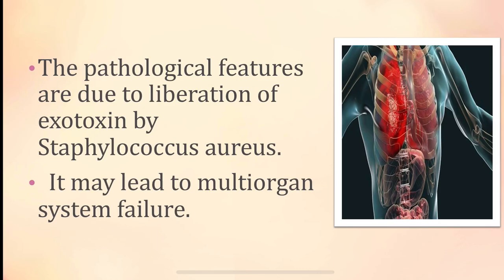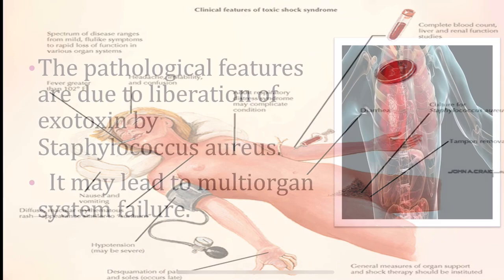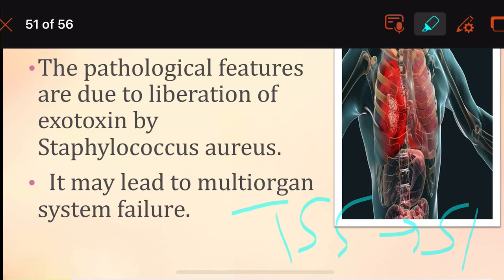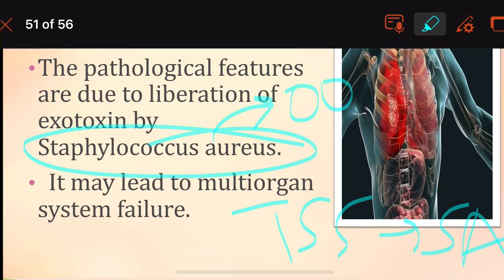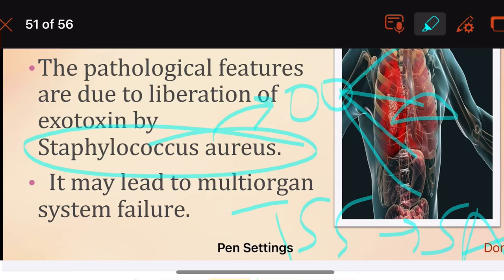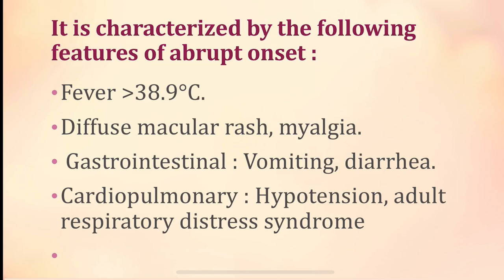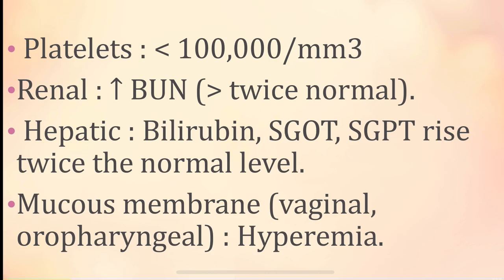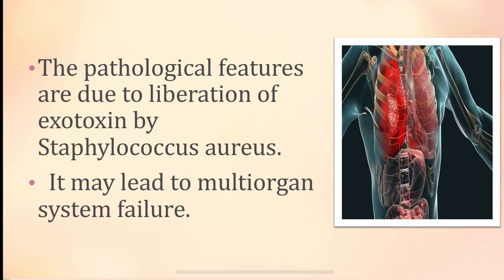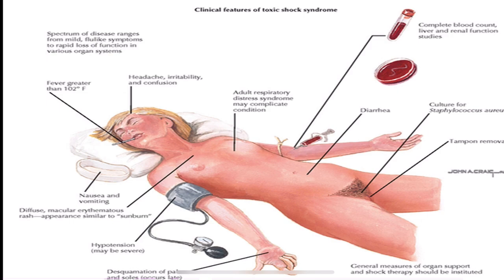The pathological features occur because of the exotoxin released by Staphylococcus aureus. This exotoxin travels to various systems: raising SGOT/SGPT in the liver, increasing BUN to twice normal in the kidneys, reducing platelet count below 1 lakh/mm³, and causing hyperemia of mucous membranes. It can also lead to multi-organ system failure.